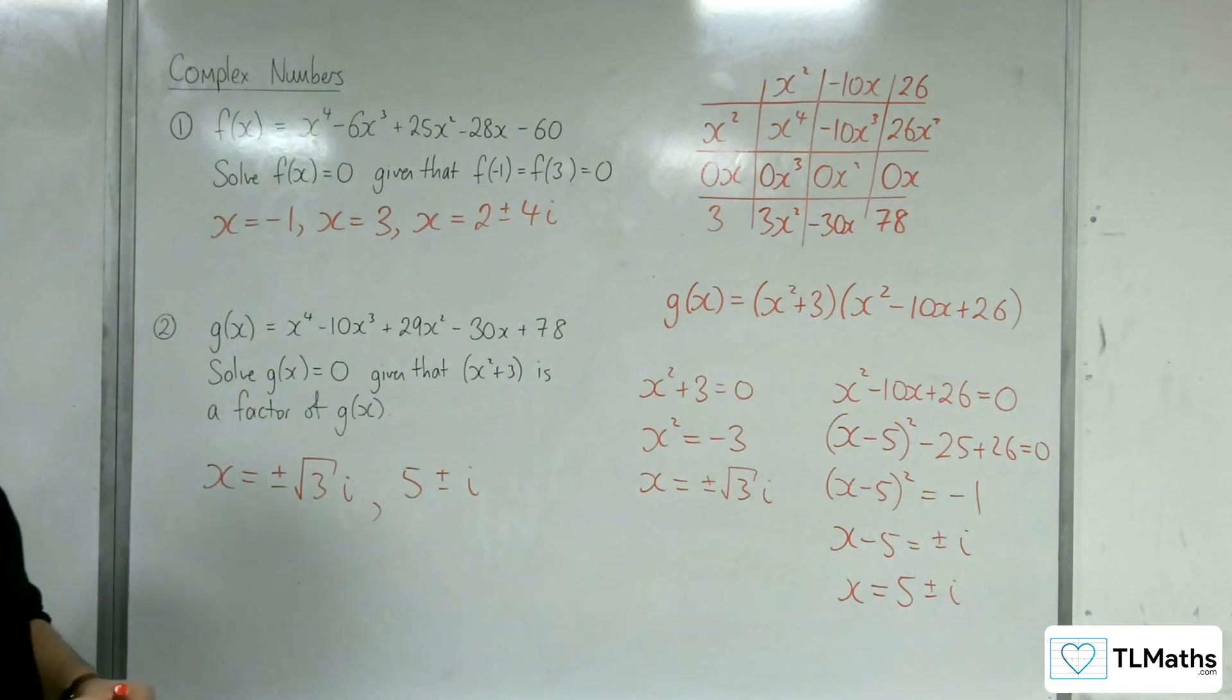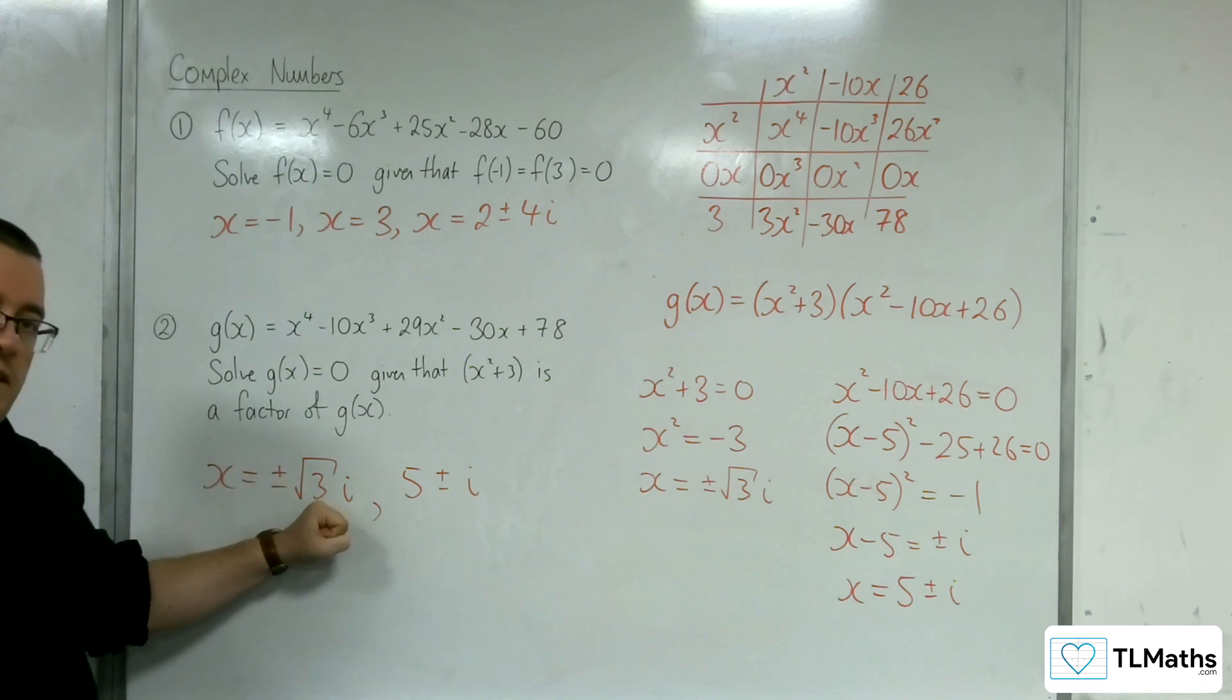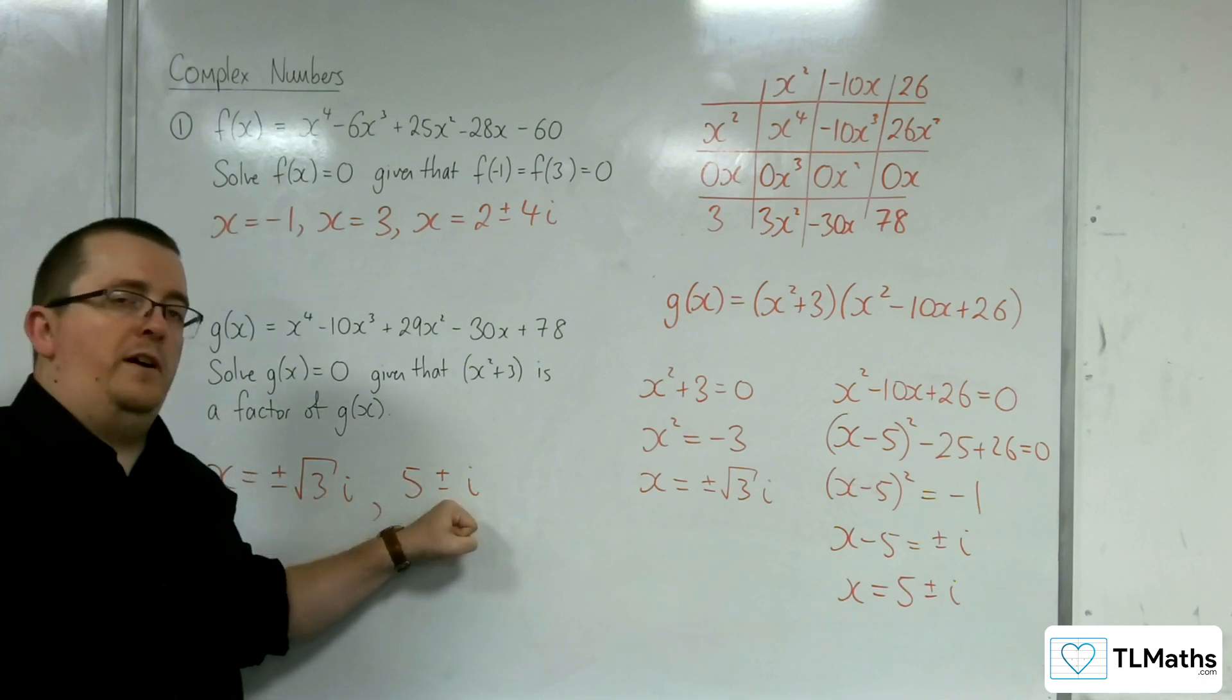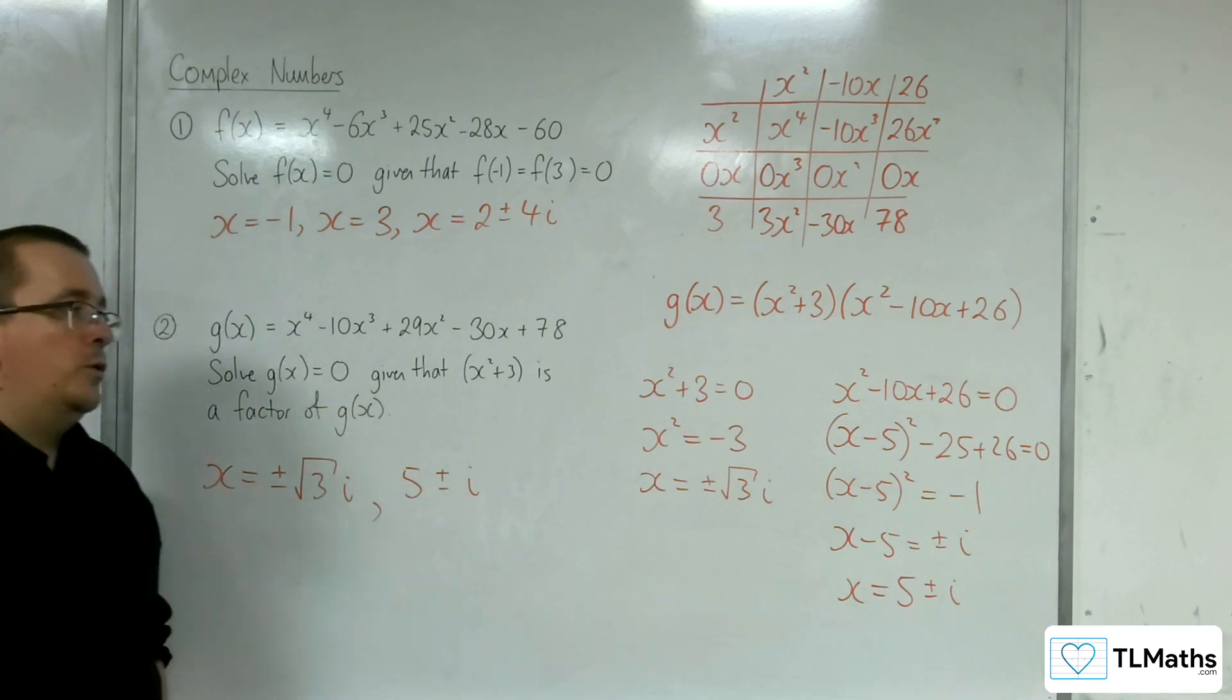And so there are these four solutions: positive √3i, negative √3i, 5 + i, and 5 - i. They are the four solutions to question number 2.